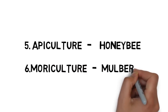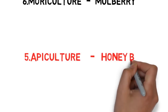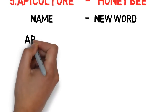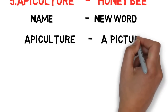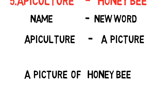Apiculture is related to honeybee. Let me explain the trick: apiculture is similar to the word 'a picture.' In apiculture, if you remove 'ul', you get 'a picture.' So use it in a sentence: a picture of a honeybee. Here 'picture' reminds you of apiculture. Apiculture is related to honeybee.